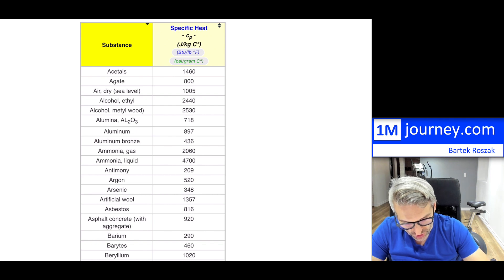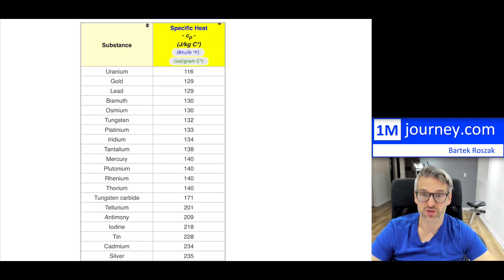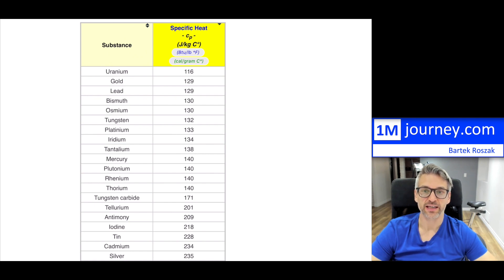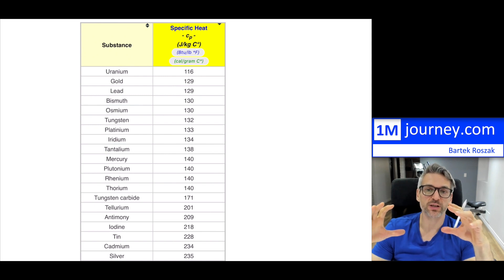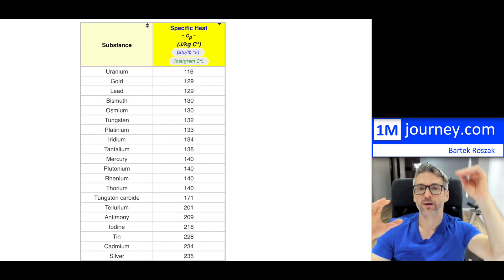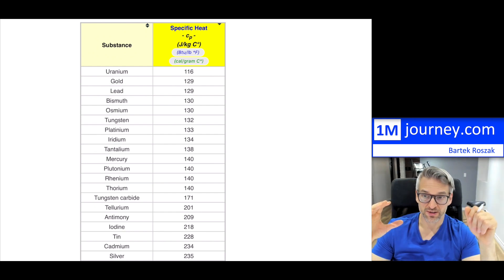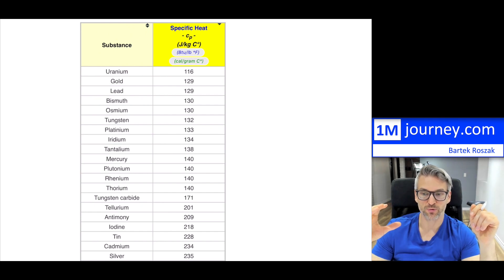Rearranging from the smallest specific heat capacity, notice uranium, gold, lead, platinum, tungsten — all of these require very little energy. If you took one kilogram of gold, you would only need 129 joules to increase its temperature by one degree Celsius. So it's a very good conductor, as are the others listed there, and we would want to use these as conductors.